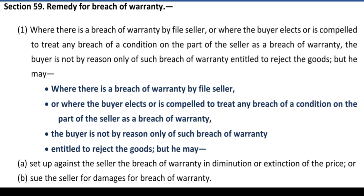As seen in Section 12, warranty is a stipulation collateral to the main purpose of contract, breach of which gives rise to a claim for damages but not a right to treat the contract as repudiated. So if warranty is breached, buyer can claim damages but cannot cancel the contract or return the goods. Section 59 reiterates the same principle in more detail, explaining what rights are available to the buyer in case of breach of warranty.